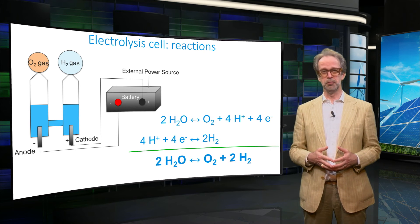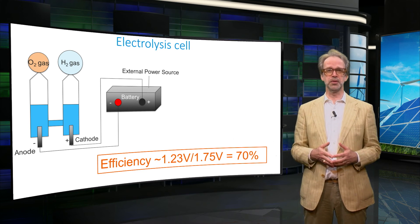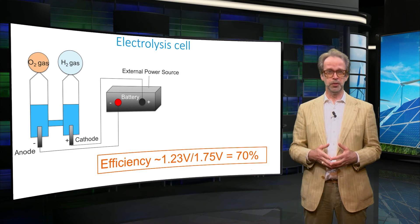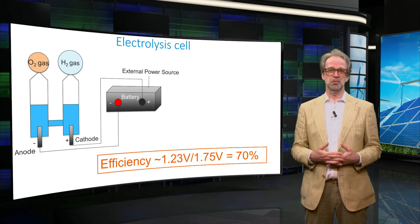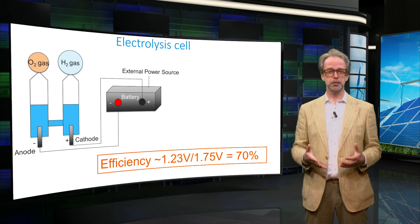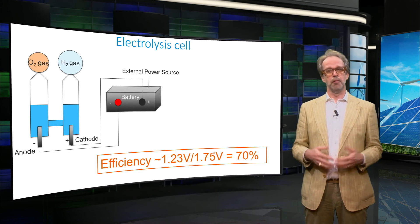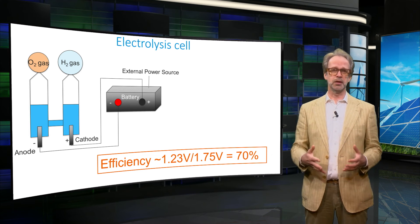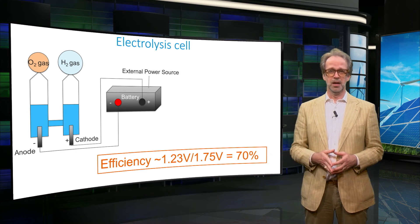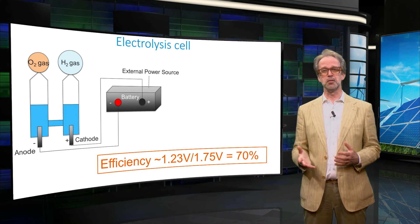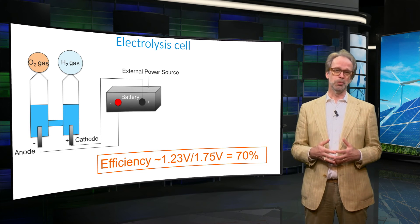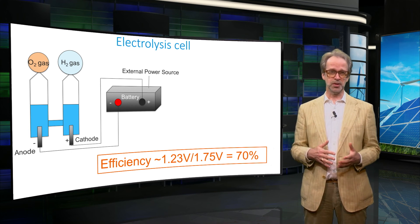The total reaction is simply the reverse of the reaction in a fuel cell. In the ideal case, one would therefore expect the electrical potential required for water splitting to be 1.23V — the reverse of what we get as the maximum potential of a fuel cell. However, in practice we need a much higher potential of around 1.75V to generate enough current. So the efficiency to convert electricity to hydrogen is around 70%, that is the ratio between 1.23V and 1.75V.